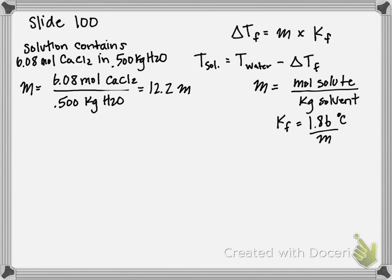So now we can plug this value into our change in freezing temperature equation: 12.2 molal, that's our little m up here. And our Kf, our freezing point depression constant for a water solution, is 1.86 degrees Celsius per molal. So molality cancels, and I'm left in units of Celsius. And if I do this calculation, I get that my change in freezing point is 22.7 degrees Celsius.